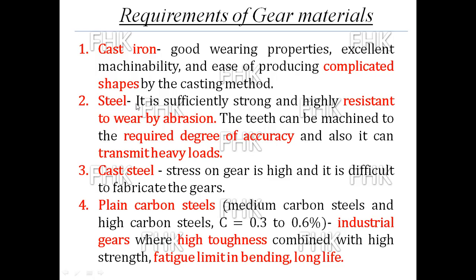The second material is steel. Steel is sufficiently strong and highly resistant to wear by abrasion, so gears are also manufactured from steel. The teeth can be machined to the required degree of accuracy, and it can transmit heavy loads. So for heavy load applications, you use steel material for manufacturing gears. The third material is cast steel. Whenever the stresses on a gear are high and it is difficult to fabricate the gear, cast steel material is used.